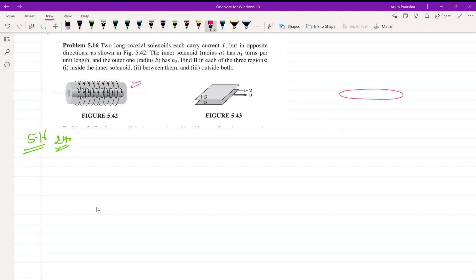The inner solenoid is of radius a and n turns. We have n1 turns over here, and the direction of magnetic field is anticlockwise. Again, he is saying that we need to consider a solenoid of radius B, which is a little bigger.